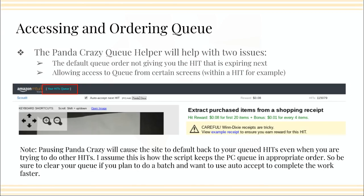My advice: if you're going to pause PandaCrazy for any reason and want to continue working on the worker website, make sure your queue is clear. If you're going to use PandaCrazy and pause it in any way, just make sure your queue is empty and then go back to the worker website to work through your hits — otherwise you're going to keep being sent back to your queue, which is frustrating. I encountered that earlier today with the batch I was using. If it's glitchy and you're wondering why you can't just keep hitting 'accept next,' think about whether PandaCrazy is running and paused in the background and whether there's anything in your queue.